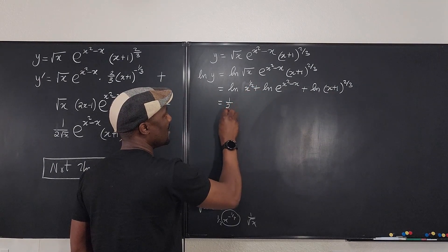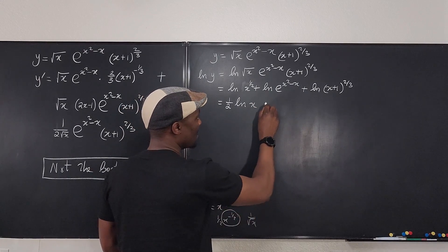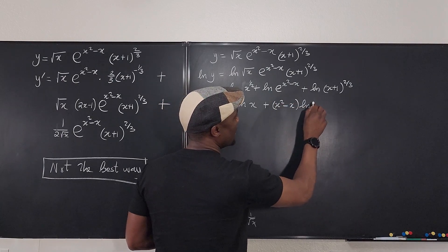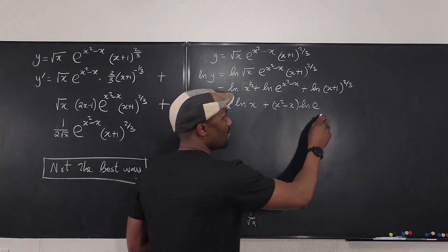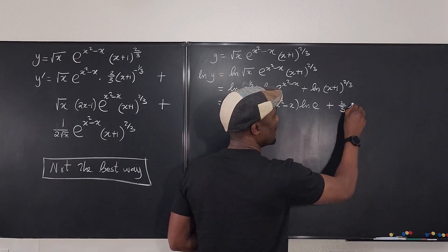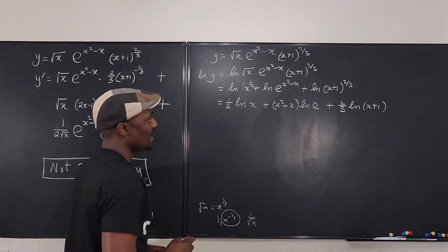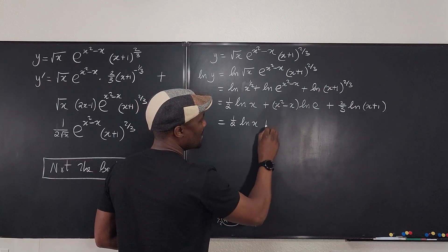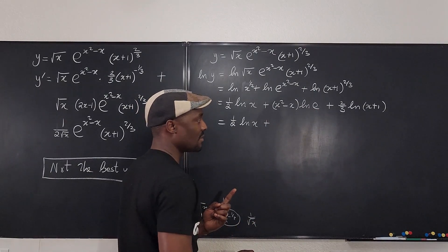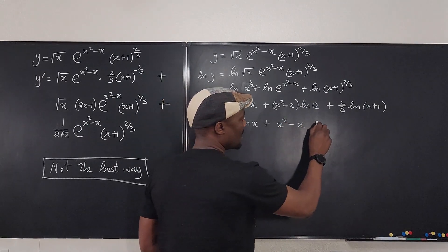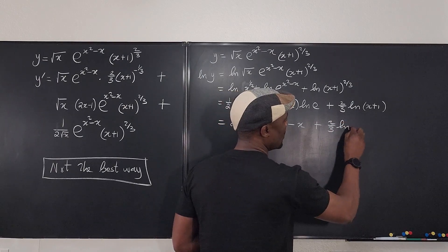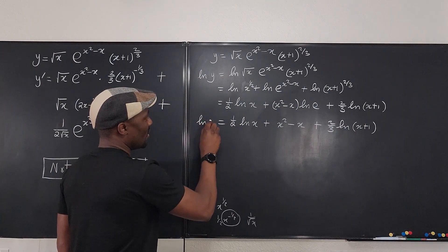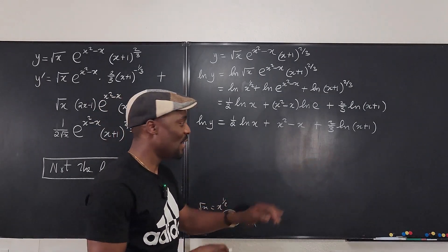So I can bring that one half down: one half times the natural log of x, plus I can bring the exponent down and it becomes x squared minus x times the natural log of e, plus two-thirds times the natural log of x plus one. One more simplification: one half the natural log of x, plus — since the natural log of e is one — we just write x squared minus x, plus two-thirds of the natural log of x plus one. That's it — this is the natural log of y.